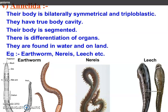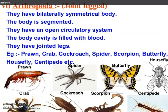This is about phylum Annelida. Their body is bilaterally symmetrical and it is also triploblastic. They have a true body cavity. The body is segmented, as you can see in this figure. There is a differentiation of organs. They are found in water and on land. For example, earthworm, Nereis, leech, etc.